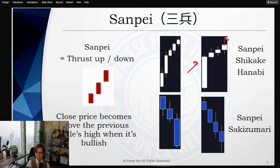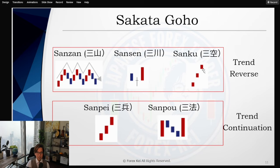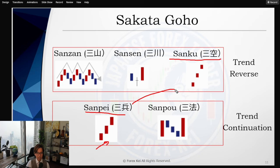When you see candlesticks with a wick pointing up, this might be the end of the trend. Also per the original teaching, when Sanpei becomes Sanku, it indicates a trend reversal. Sanku doesn't really appear on the forex market because it runs almost 24 hours every day, but Sanku can be seen in some stock markets or indexes. Sanpei is a healthy uptrend, but when Sanpei becomes Sanku, you don't want to trade anymore. If you're holding a buy, this is your exit timing. Or if you want to sell, confirm the next candlestick to be bearish and then sell.